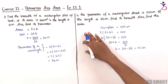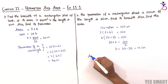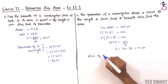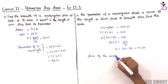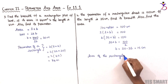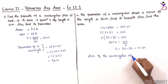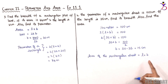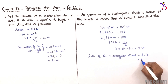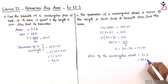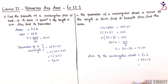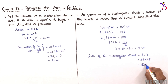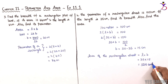Now let's find the area of the rectangular sheet. Area equals length into breadth, that is 35 into 15. On multiplying we get 525 centimeter square. Therefore the area is 525 centimeter square.